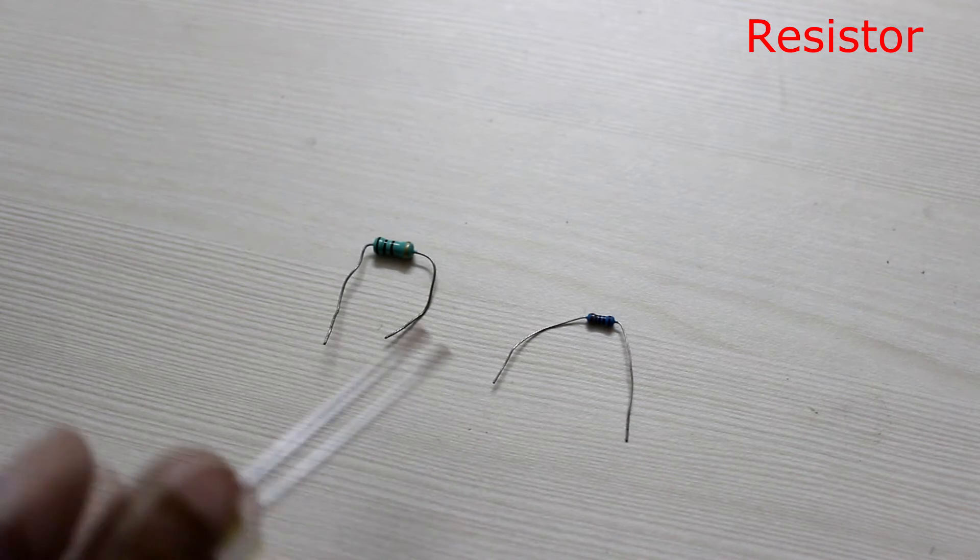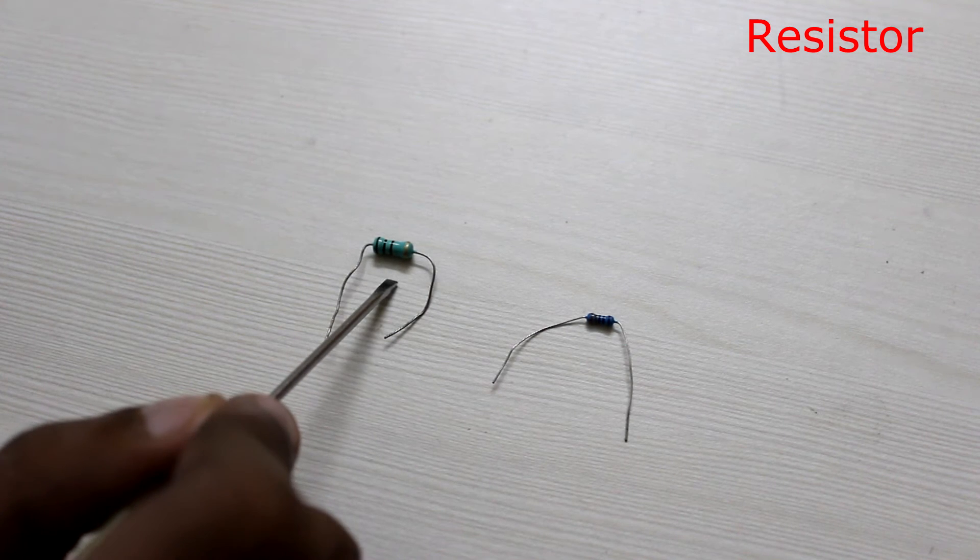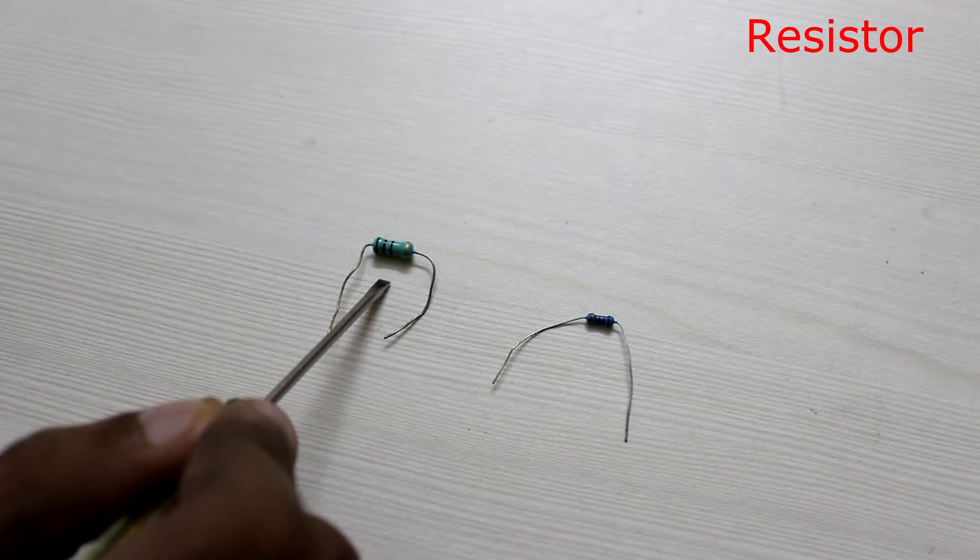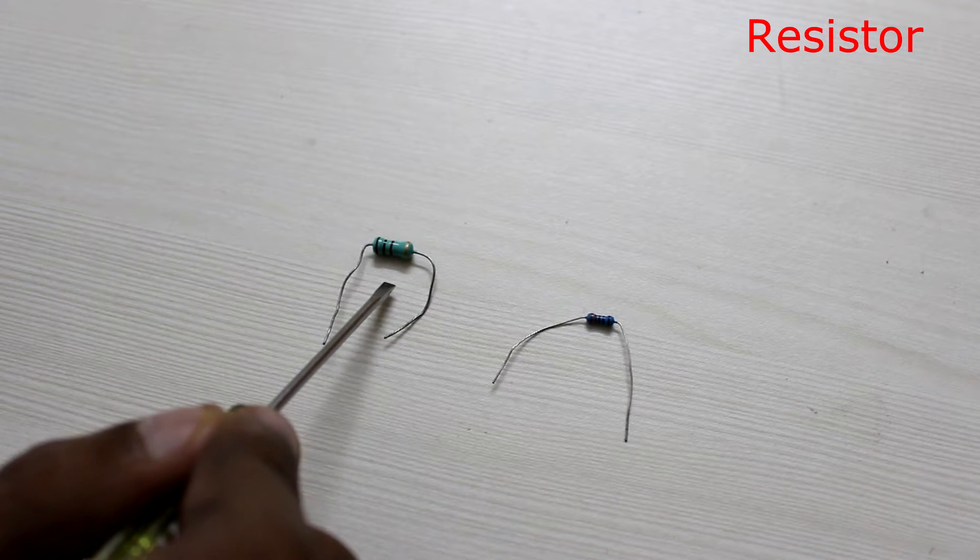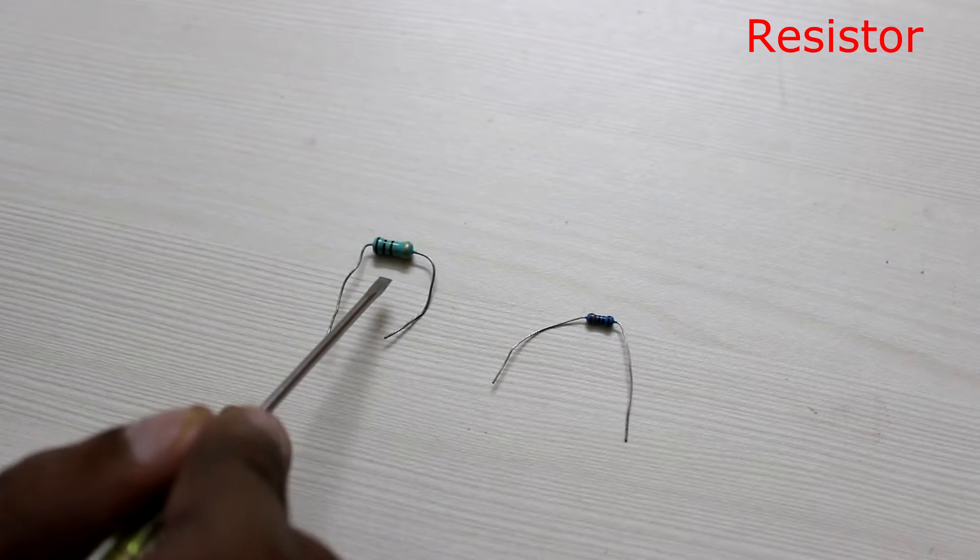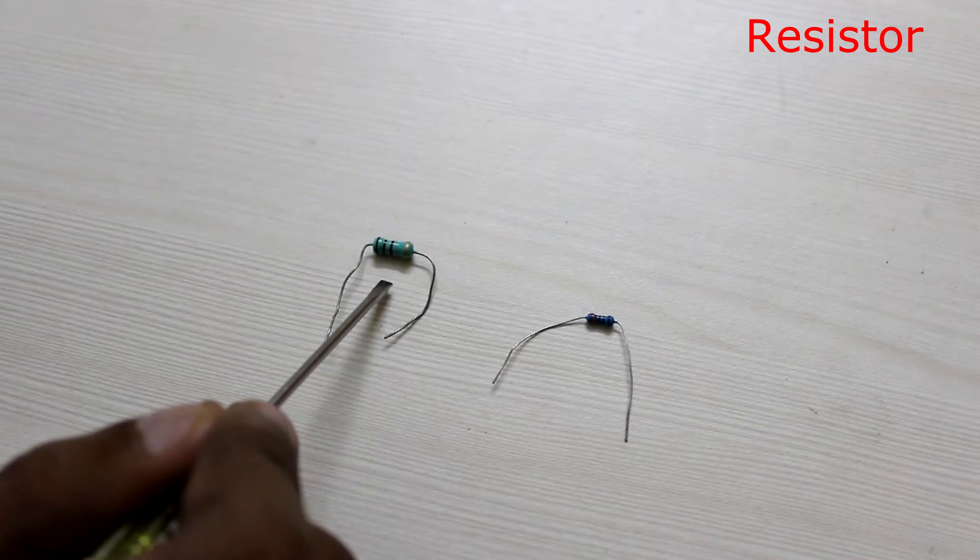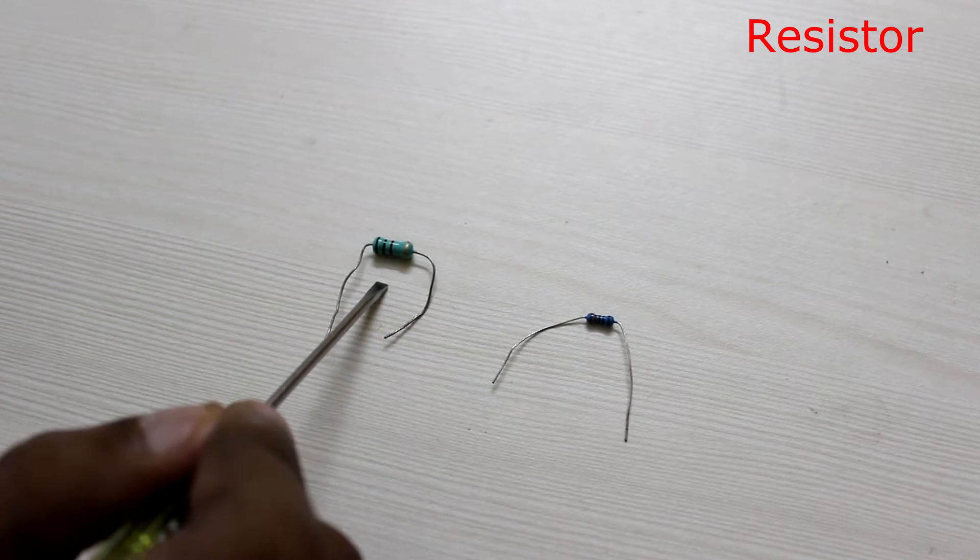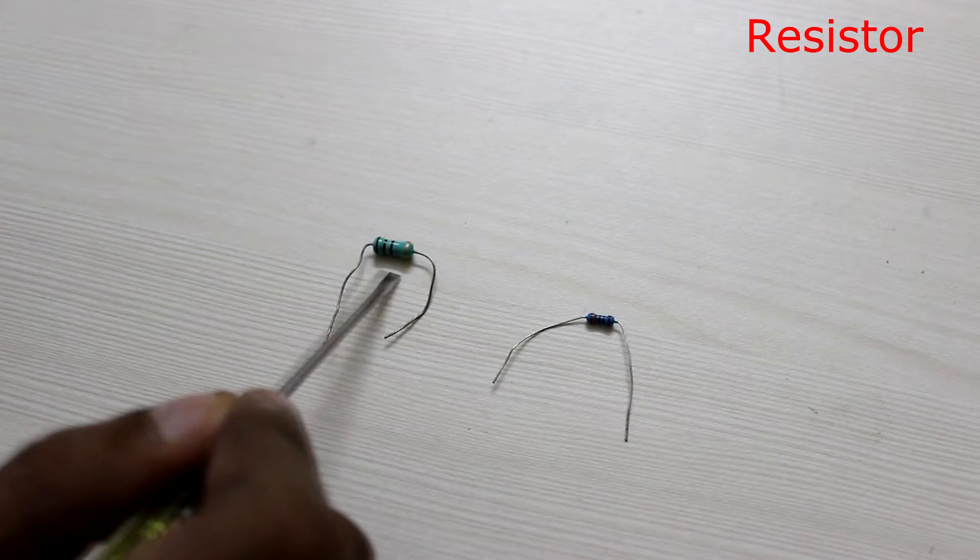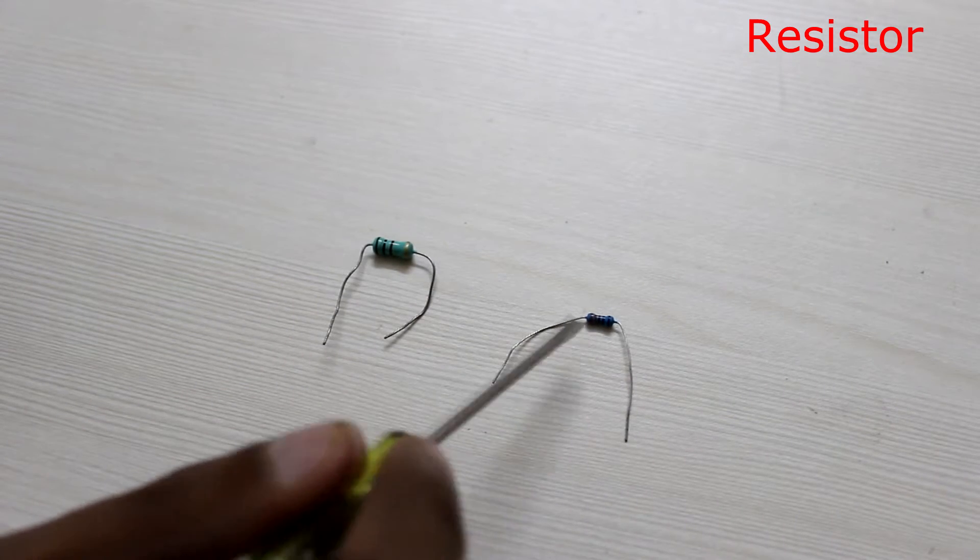This is how a resistor looks like. The value of the resistance can be found by looking at the color bands on the resistor's body. You can look at the link in the description below to learn more. Each resistor has a wattage rating usually depending on its size. Here I show a 1 watt resistor and a 0.25 watt resistor.